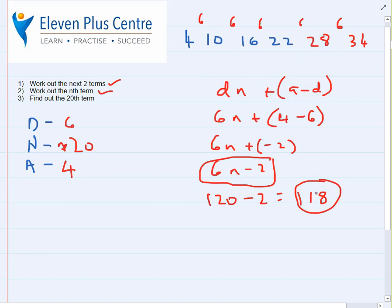So the 20th term in this sequence is 118. You can see why it's very important to first work out the DNA and then substitute the numbers. This is really important for finding the 10th, 20th, or 80th term — otherwise you'd be there all day adding 6 repeatedly. Hopefully you understood that; if not, rewind and watch again.